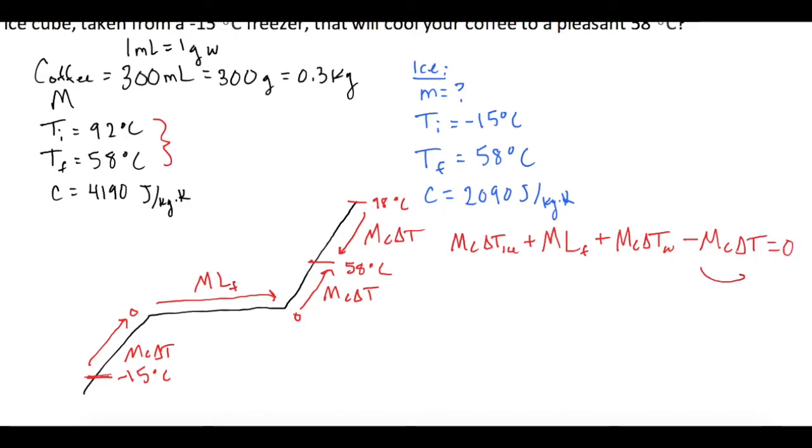Now if we add over the M C delta T for the coffee, we get M C delta T for ice plus mass times LF for the water plus M C delta T of the water equals now M C delta T for the coffee. And we want to know what the mass of the ice cube is.